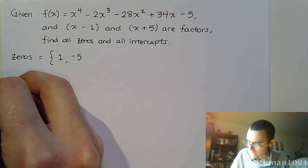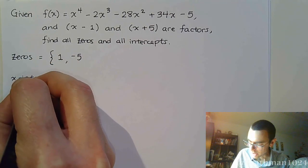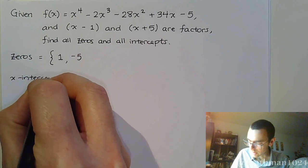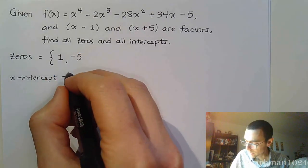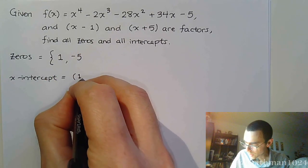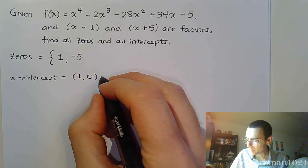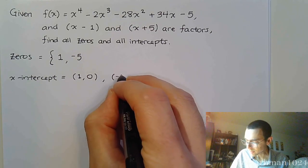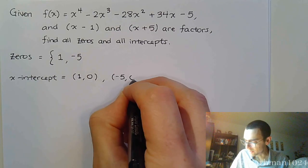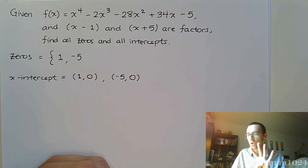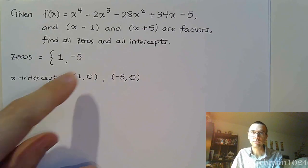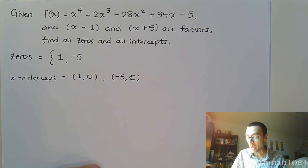For our intercepts, we already know something about our x-intercepts. Since these two guys are real, they will each correspond to an x-intercept. So 1, 0 and negative 5, 0. Now, since this is degree 4, we could have up to two more x-intercepts. It's all based on if these other two zeros are real. If they are imaginary, then I don't have anything. I won't have any more x-intercepts.